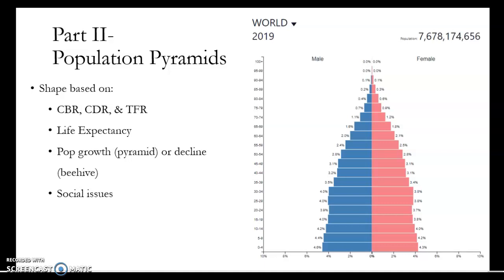You should be able to place the population pyramid into the different stages of the demographic transition model. As we go through these different pyramids, we'll look at how the shape reflects the crude birth rate, the crude death rate, and the total fertility rate. We'll also look at how tall they are — the higher the pyramid, the longer the life expectancy.